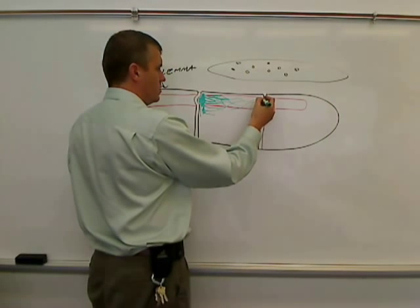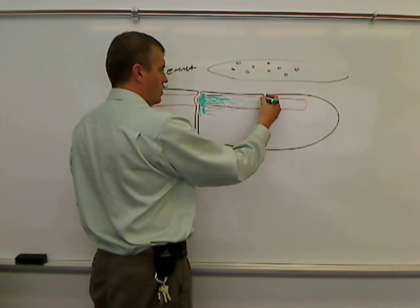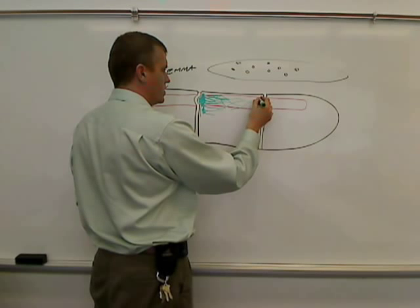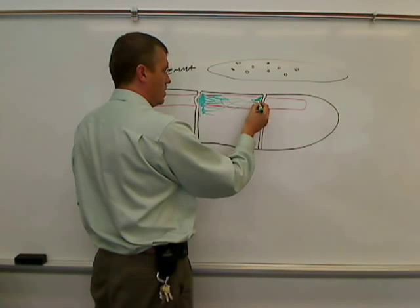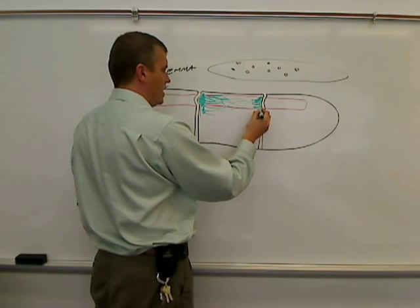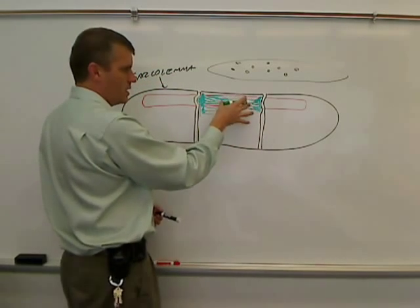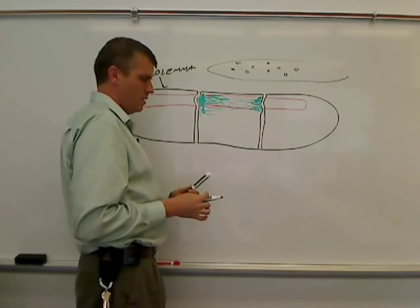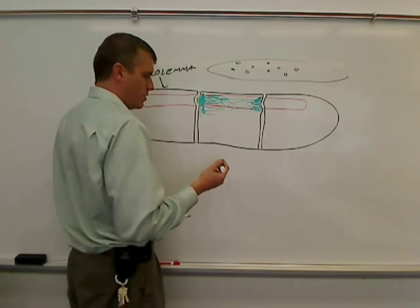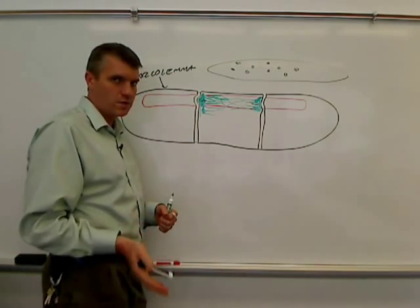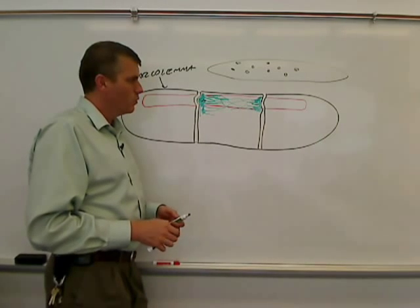Over at this T-tubule, there will also be an area where the sarcoplasmic reticulum becomes thicker and aligns itself right next to the T-tubule. And again, there's connections in between. Now again, one of the major things to remember here is this is a storage place for calcium. That's what the sarcoplasmic reticulum does. It stores and releases calcium when needed.